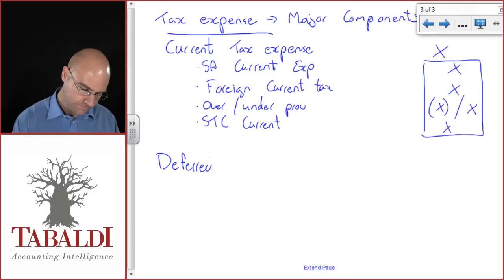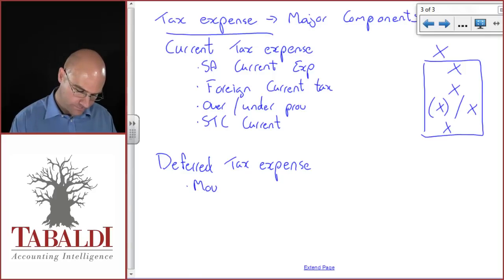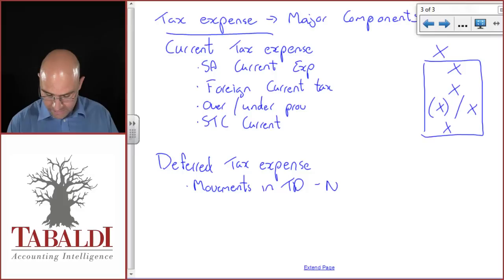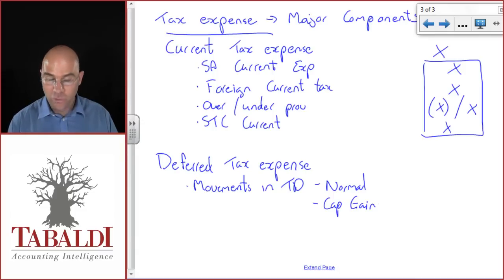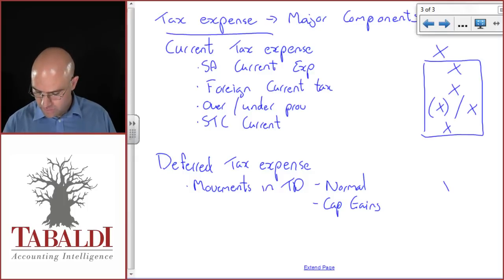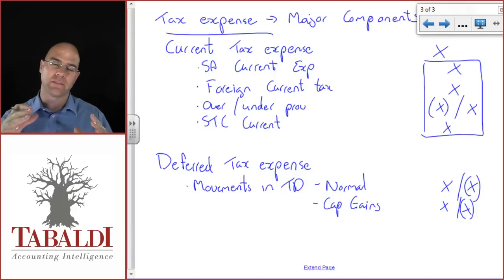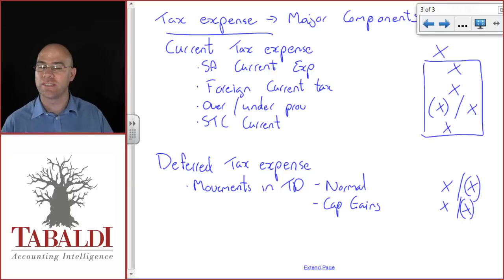The deferred tax expense has quite a few components. The first is your movements in temporary differences — that's going to be at normal rates, and I'm going to ask you to disclose and calculate your capital gains or CGT rates and the movements thereon separately, especially for years such as 2012 when there was a change in the capital gains inclusion rate. This could be a positive or a negative depending on whether it's a taxable or deductible temporary difference movement, which you'll calculate ideally from your statement of financial position approach. The alternative is to work it from your current tax computation and CGT tax computation.